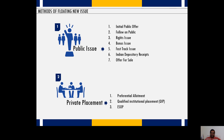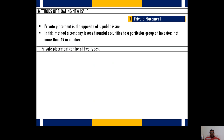Public issue is a very time-consuming process. The laws governing public issue are also quite difficult for organizations to meet, and therefore most organizations prefer private placement as an alternative. In private placement, a company issues financial securities to a particular group of investors whose number does not exceed 49, which is less than 50.